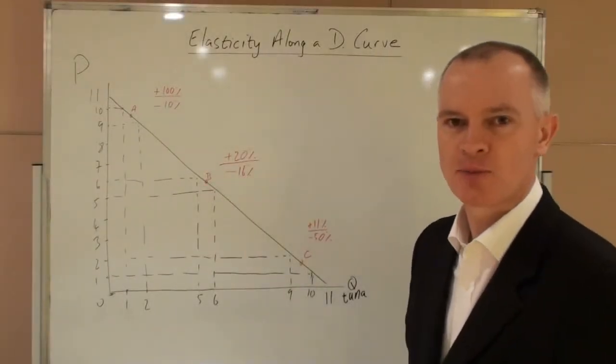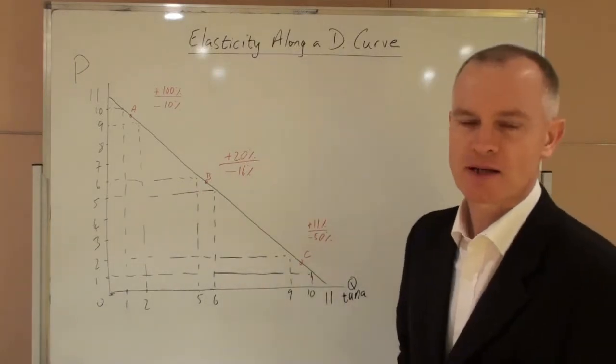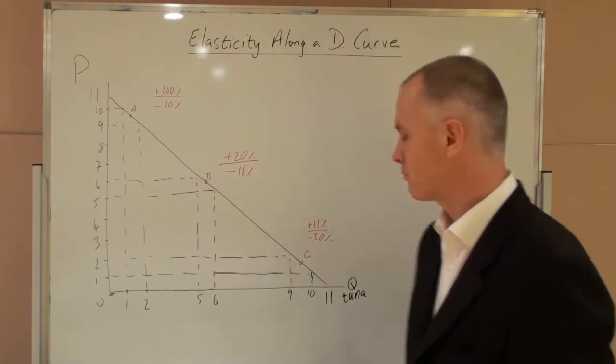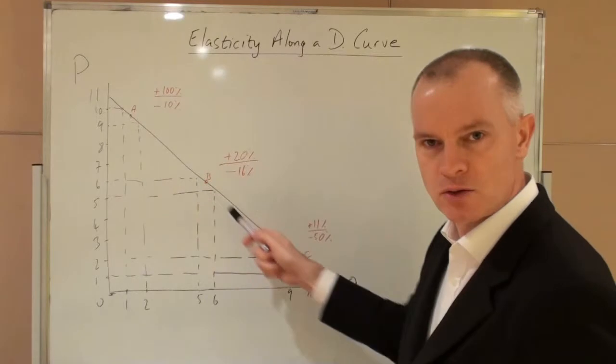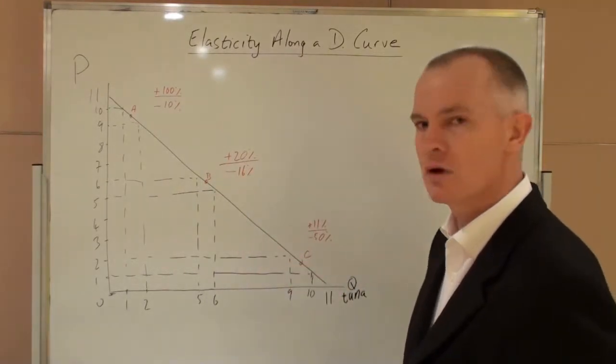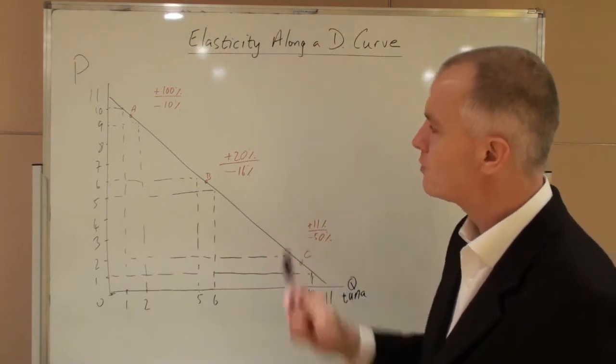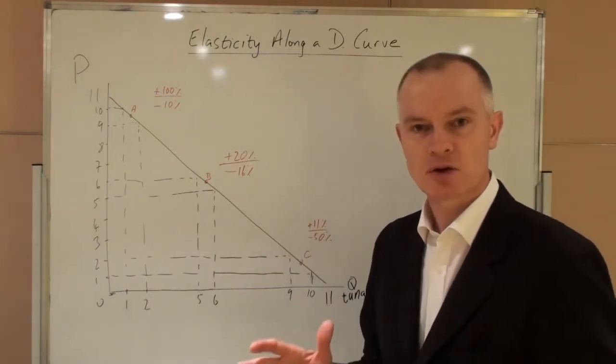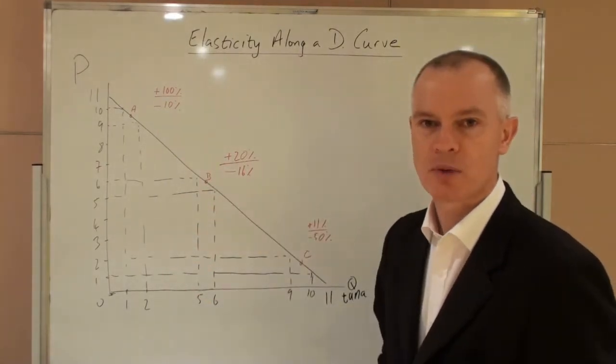Today I want to talk about price elasticity of demand, and particularly about how price elasticity of demand varies along a straight line demand curve. We have our old friend Tuna and a conventional straight line demand curve of minus one gradient. What we will see from this curve is that elasticity is not constant even though the gradient of this line remains constant at minus one.